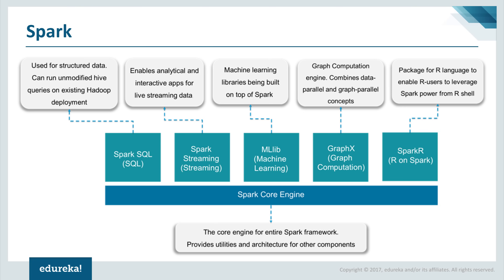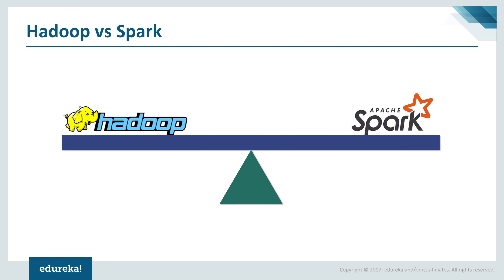GraphX is the Spark API for graphs and graph-parallel computation. It extends Spark's Resilient Distributed Datasets with a resilient distributed property graph. Spark MLlib is used for machine learning — MLlib stands for machine learning library — and is used to perform machine learning in Apache Spark.